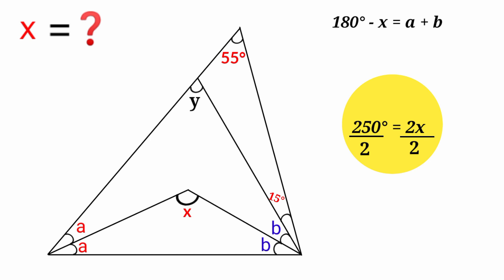To make x the subject, we divide both sides by 2. Now 250 degrees over 2 equals—250 degrees over 2 is 125 degrees, and here 2 cancels 2. So 125 degrees equals x.